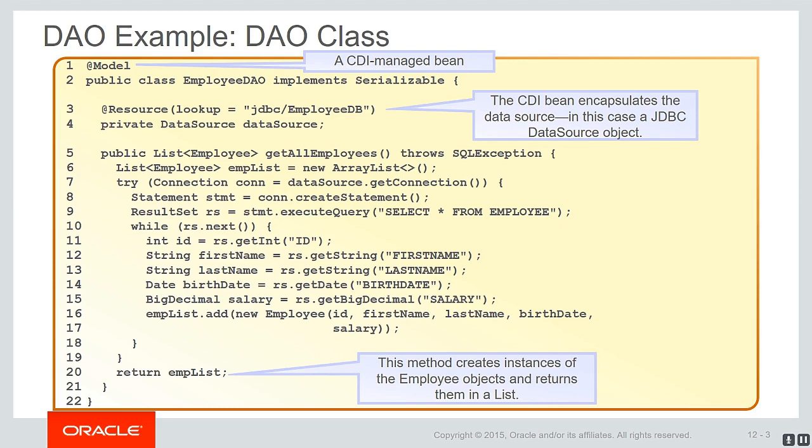The Employee DAO fetches the data from the employee table in the database, defined in the data source, and iterates through each record, matching the columns to the correct fields in the Employee class.